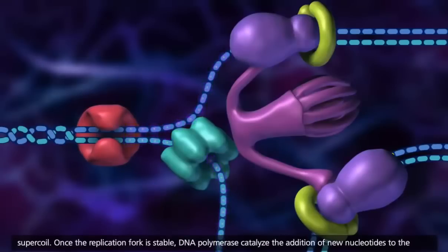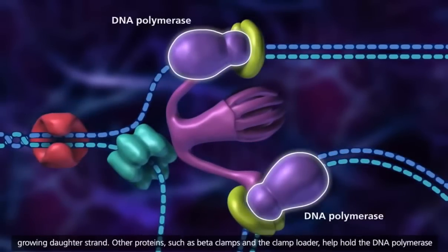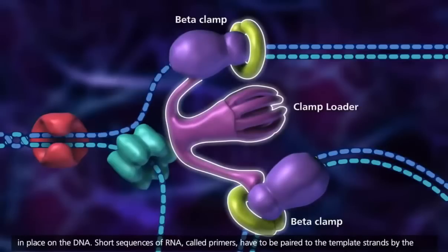Once the replication fork is stable, DNA polymerase catalyzes the addition of new nucleotides to the growing daughter strand. Other proteins, such as beta-clamps and the clamp loader, help hold the DNA polymerase in place on the DNA.